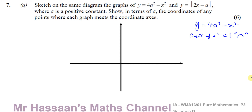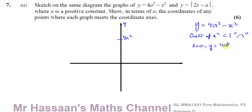The y-intercept: when x equals 0, y equals 4a squared. Since a is a positive constant, 4a squared is positive, so the graph cuts the y-axis up here at 4a squared. That point is also the vertex, because this is already in completed-square form — it's like saying 4a squared minus (x + 0) squared. So the coordinates of the vertex are (0, 4a squared).